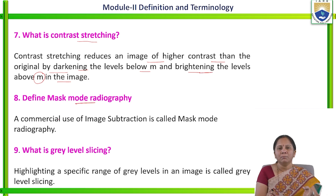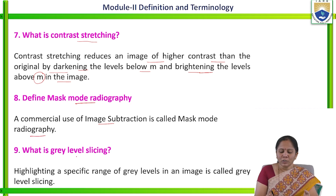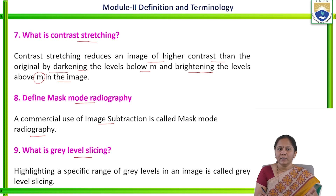Define mask mode radiography. It is a commercial use of image subtraction — it is one of the masks used in radiography. What is gray level slicing? Highlighting a specific range of gray levels in an image is called gray level slicing. For example, if you want to highlight any region of interest in an image, then gray level slicing can be performed.